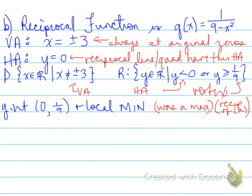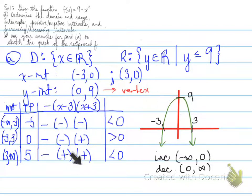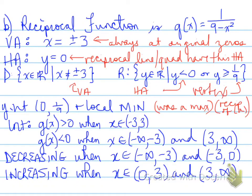Looking at the last question on the previous page: it was increasing from one interval to another, and when we did the reciprocal it was decreasing, and vice versa. Where it's decreasing, it was increasing. But the positive and negative intervals did not change. Let's go back to the other page. This is all the information that we need for the graph.